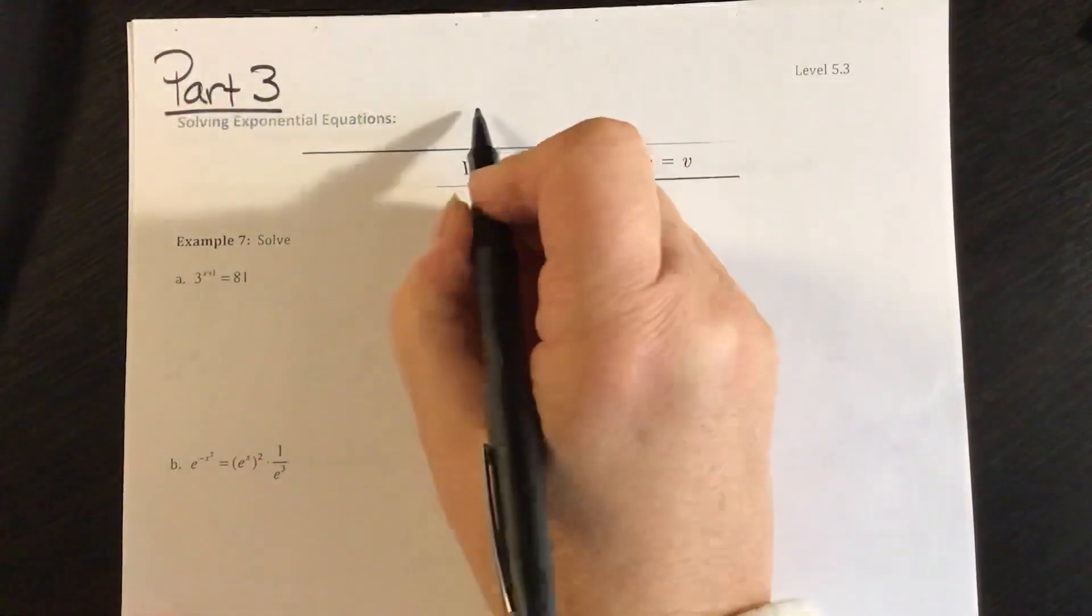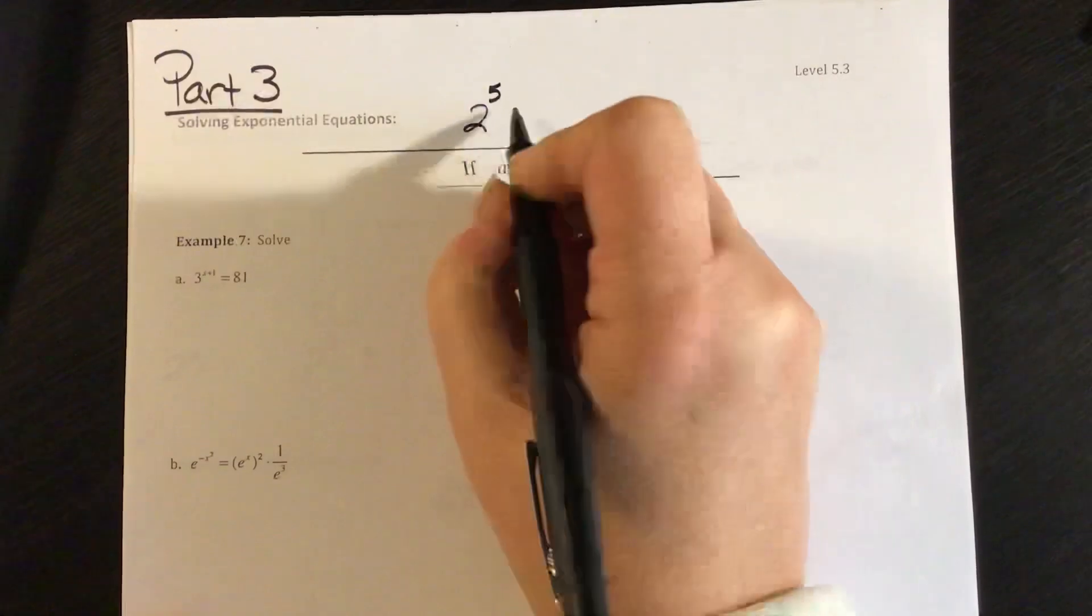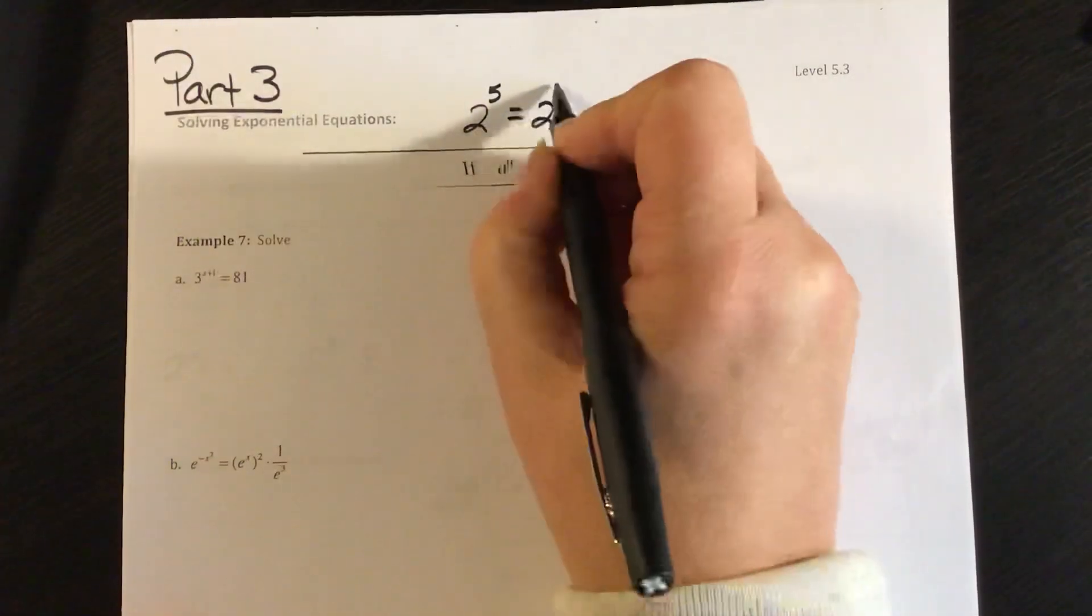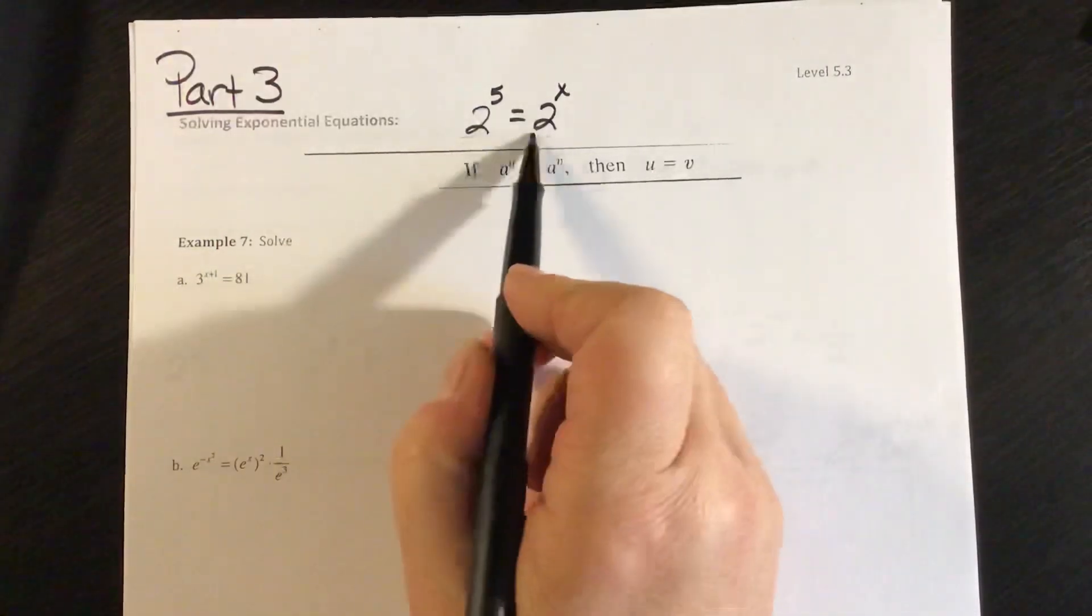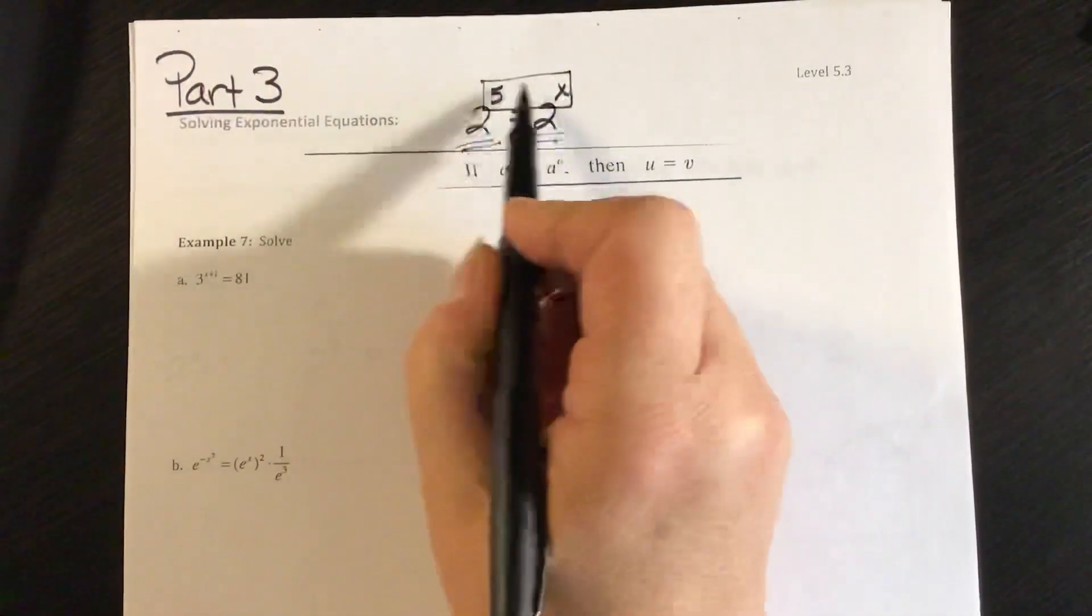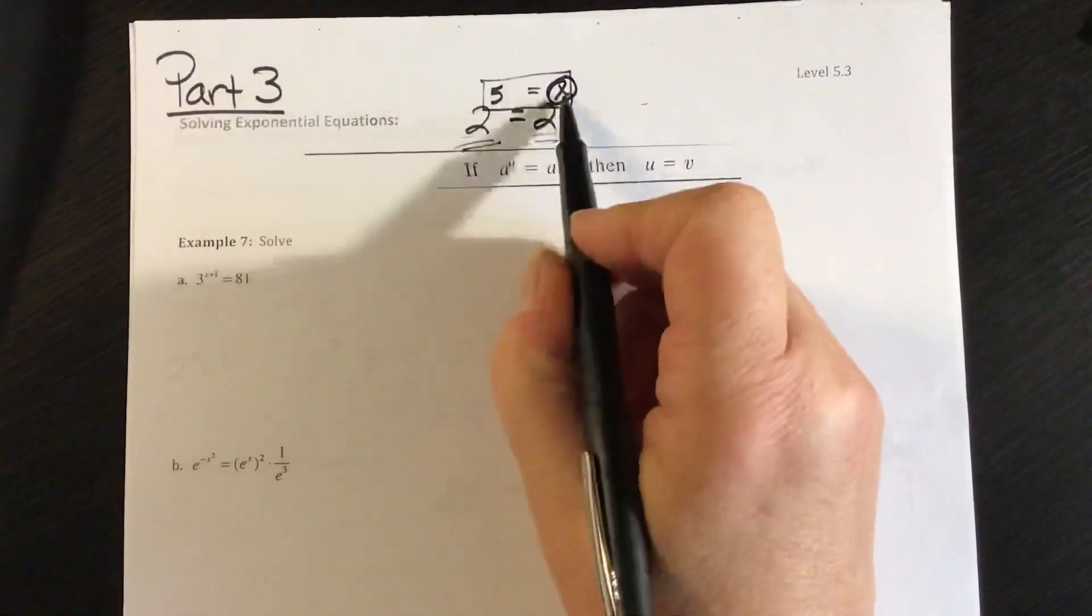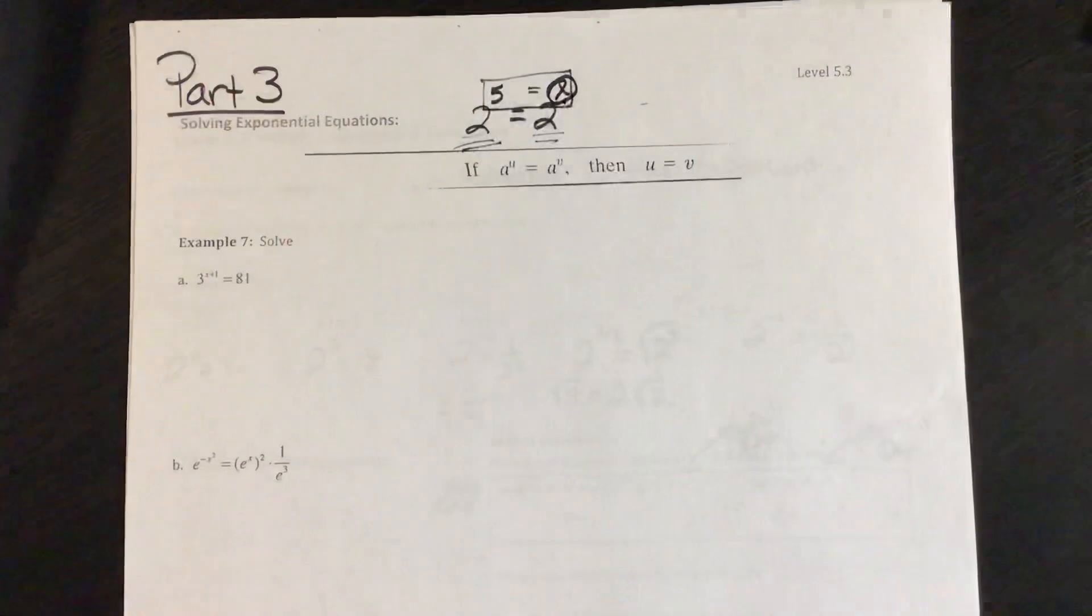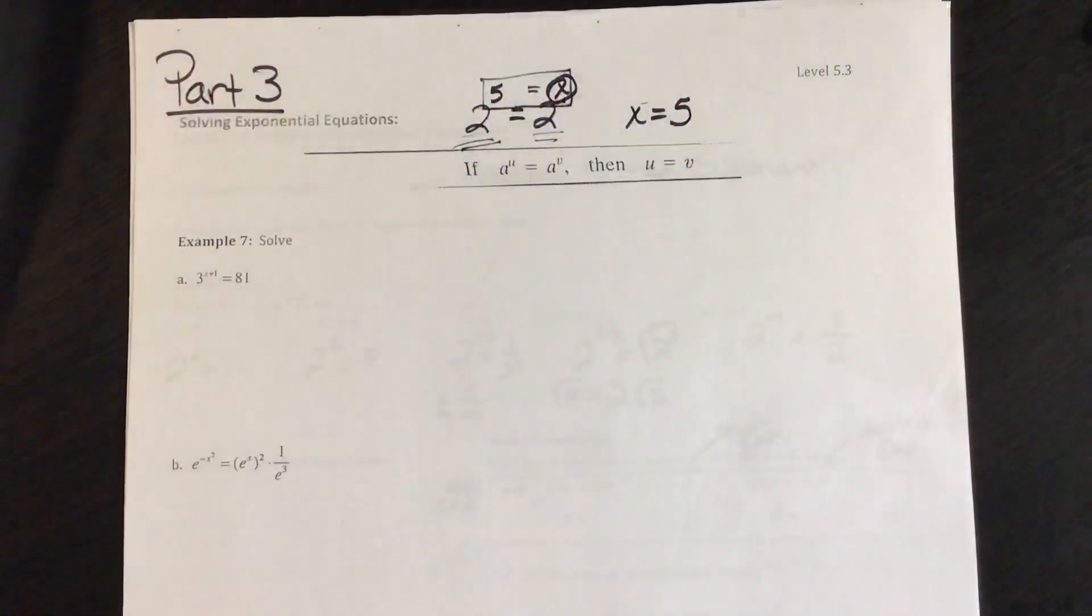Just a real quick easy example to see here. If I have 2 to the 5th power equals 2 to the x power, notice I have the same bases here, so the exponents have to equal. So in this case, to make this a true statement, this x also has to be 5. So solving the equation, x is 5.